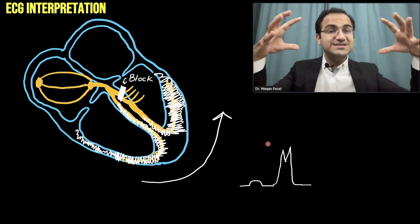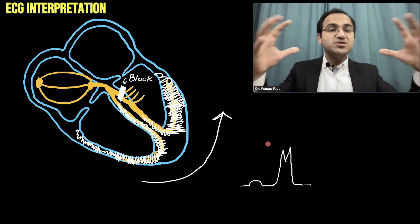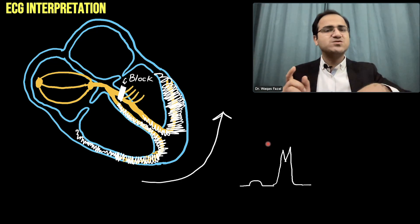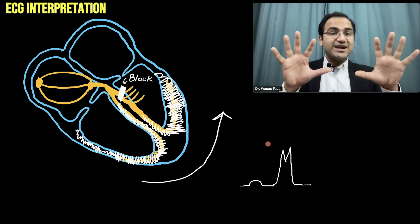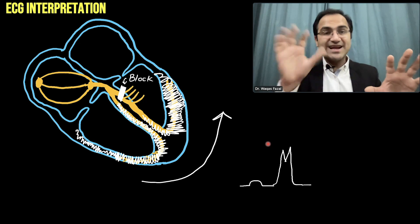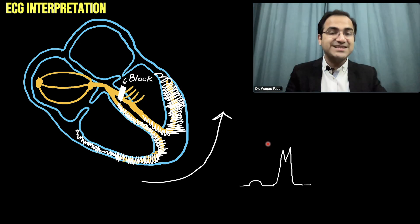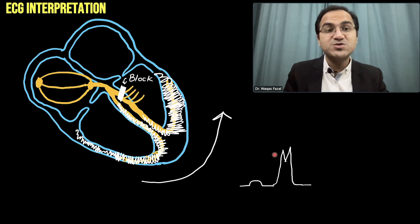The ventricles are not depolarizing all together. If both ventricles depolarize together there will be a normal single QRS wave, but here the ventricles are depolarizing separately — first the right ventricle, then the left ventricle. Therefore you see two QRS complexes forming the M wave, also called rabbit ears.